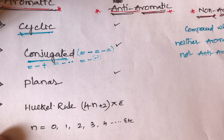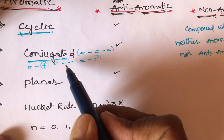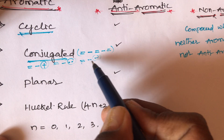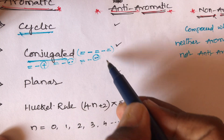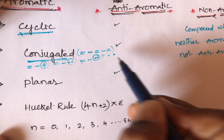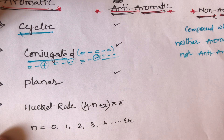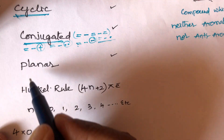Double bond then single bond then negative charge is also conjugation. And double bond then single bond then free radical is also conjugation. These are the important conjugation conditions. So: first condition is cyclic, second is conjugated, and third condition is that the compound should contain a planar structure.